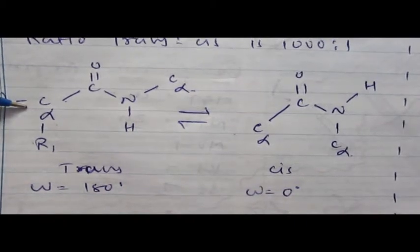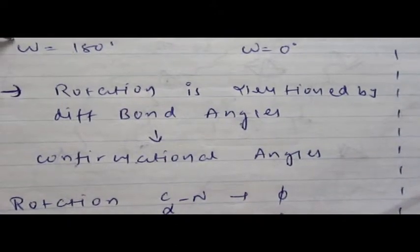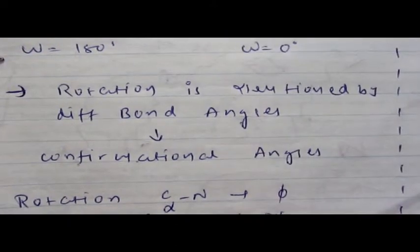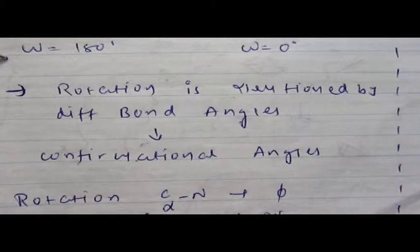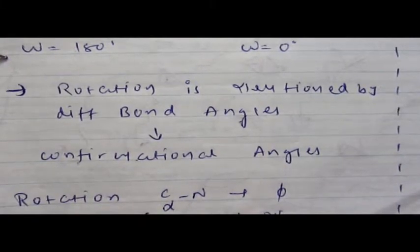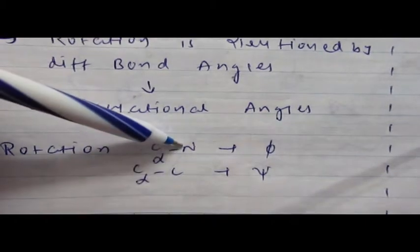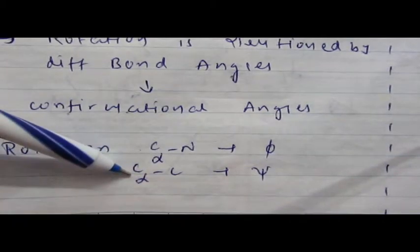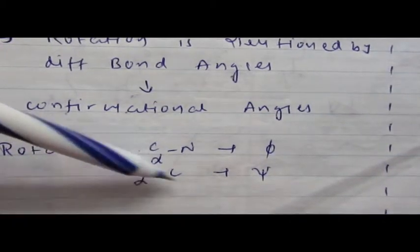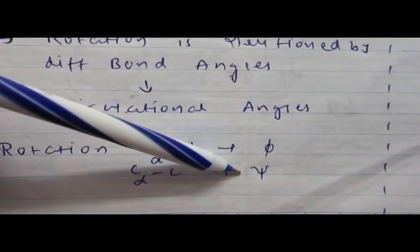This is the basic difference between trans and cis conformation. The omega angle of rotation is measured by different bond angles. The bond angle between C alpha carbon and nitrogen atom is denoted as phi, and the bond angle between C alpha carbon and carbon atom is denoted as psi. These phi and psi angles are known as conformational angles, or we can say torsion angles or dihedral angles.